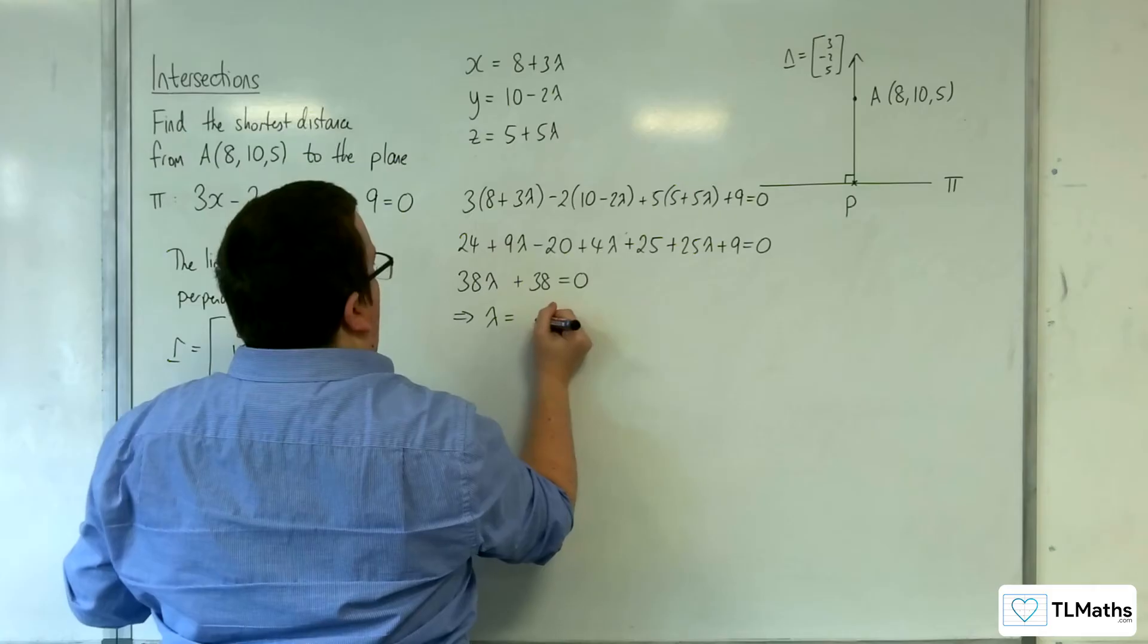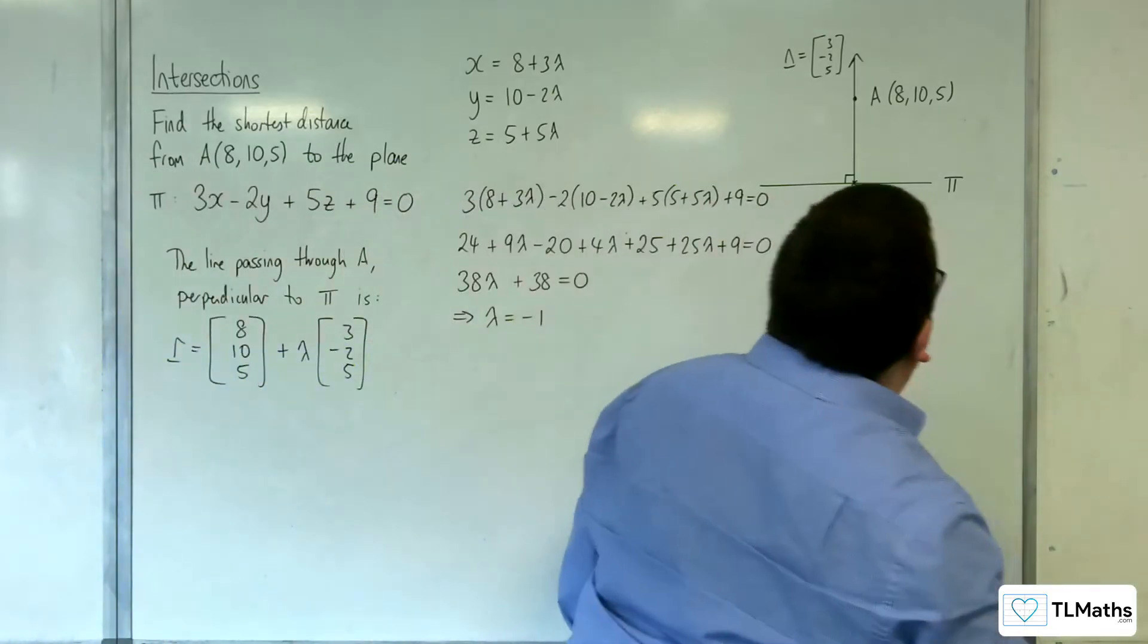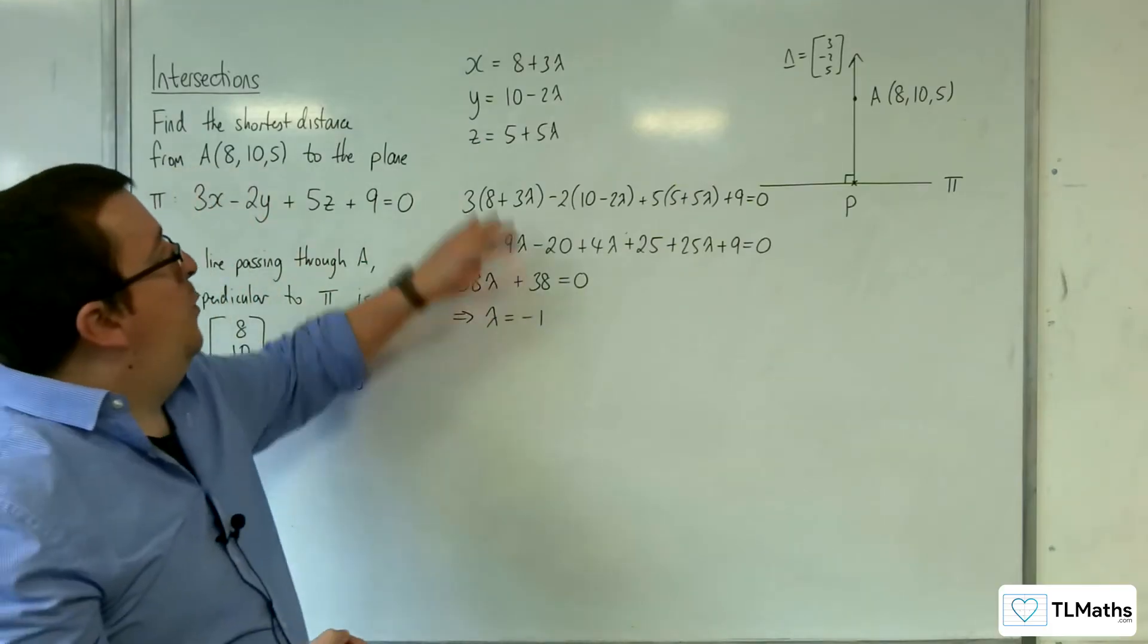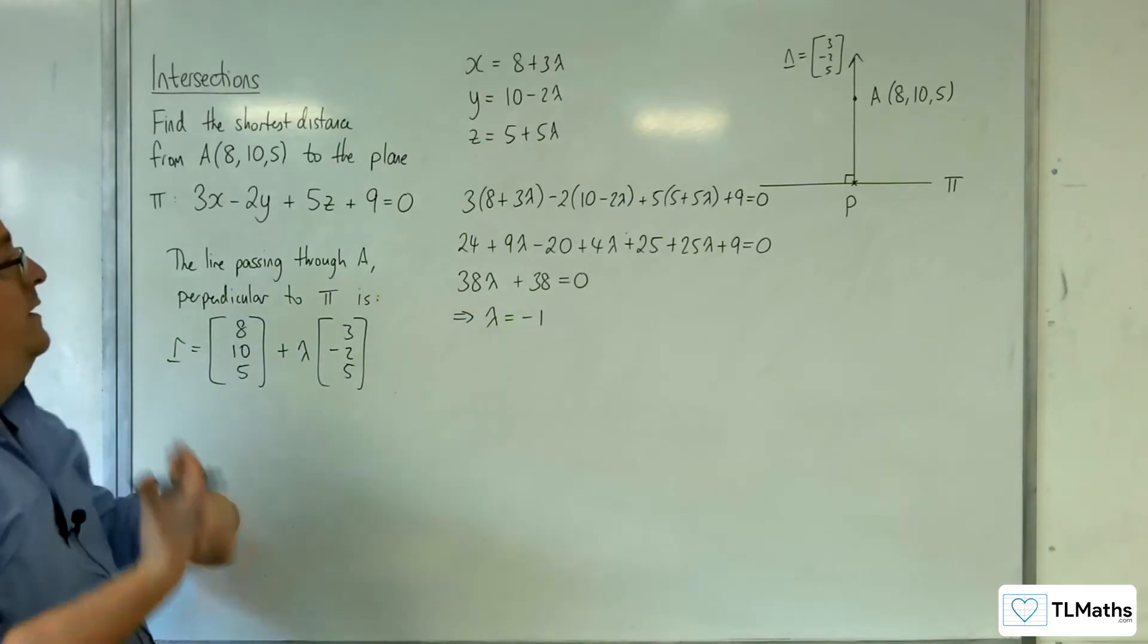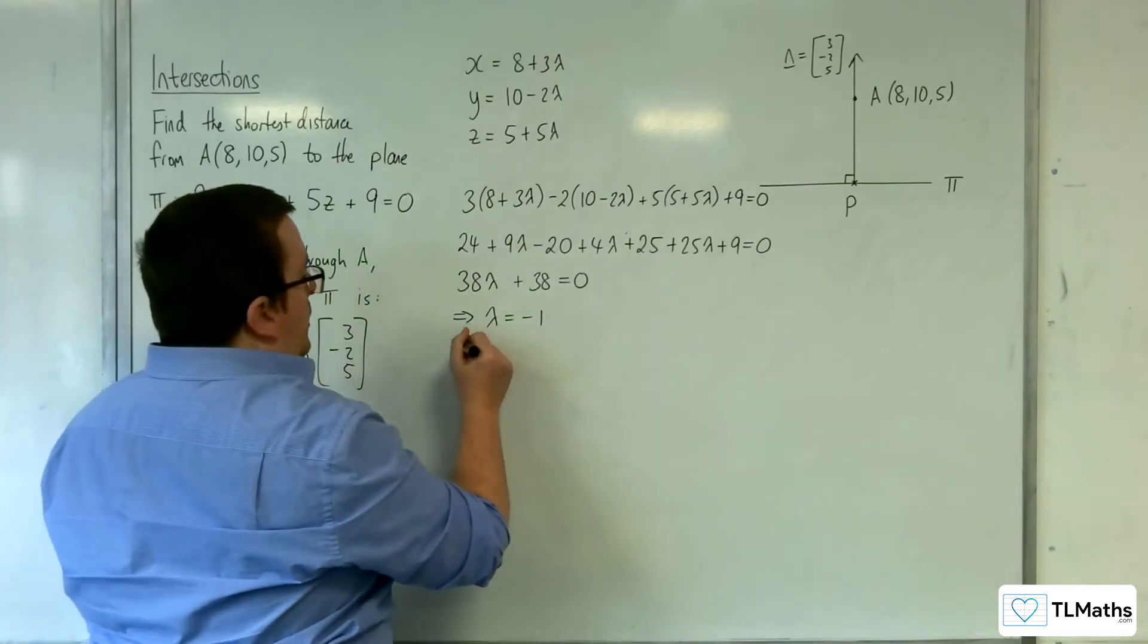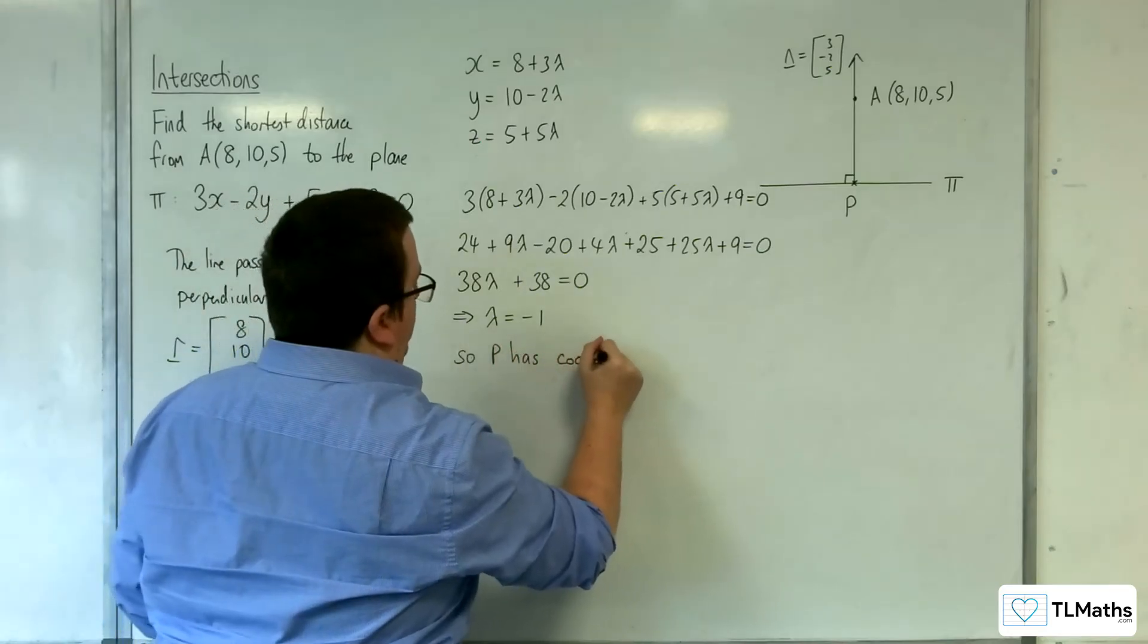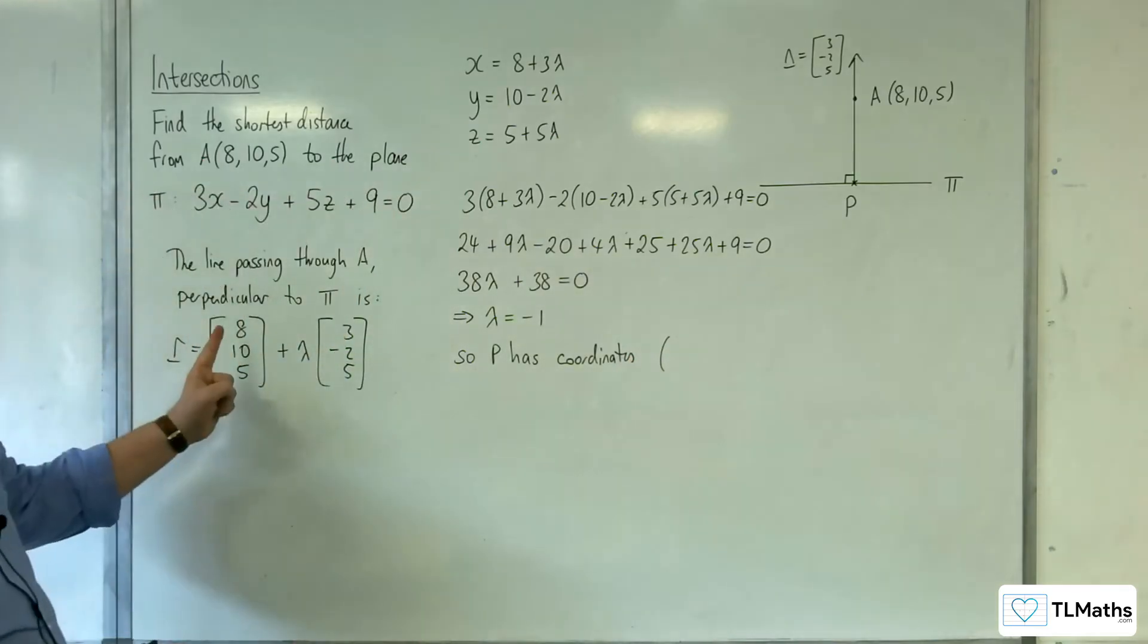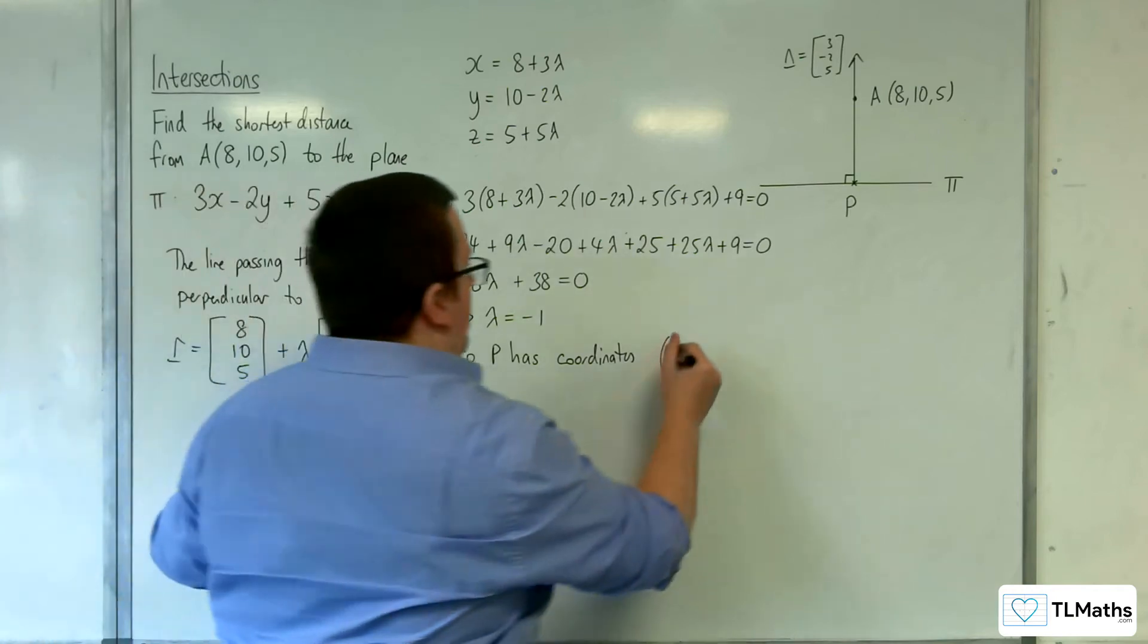So lambda must be equal to -1. So then I can substitute λ = -1 to give me the coordinates of P. So P has coordinates 8 - 3, so 5,